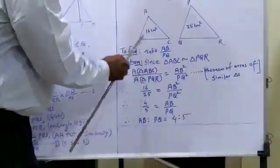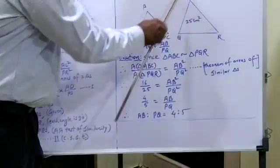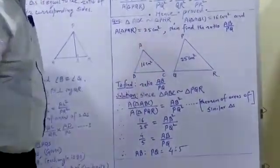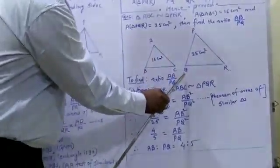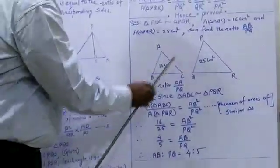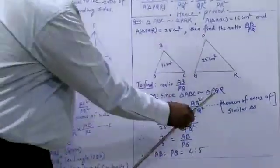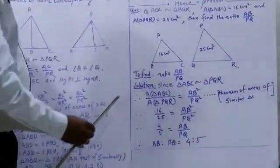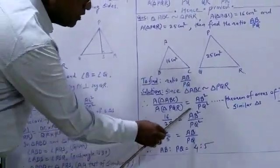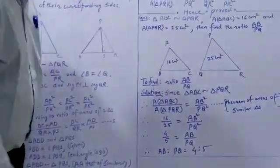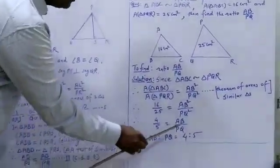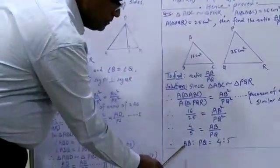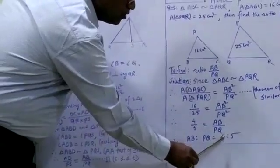Solution: Since triangle ABC is similar to triangle PQR, by the theorem of areas of similar triangles, area of triangle ABC upon area of triangle PQR equals AB square upon PQ square. Substituting: 16 upon 25 equals AB square upon PQ square. Taking the square root: 4 upon 5 equals AB upon PQ. Therefore, the required ratio AB upon PQ is equal to 4 upon 5.